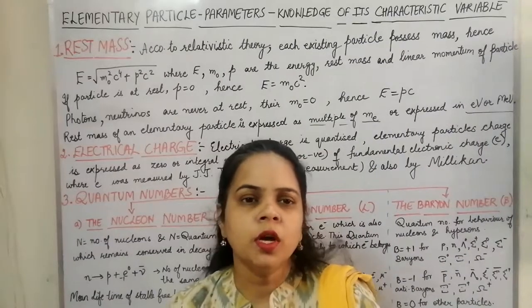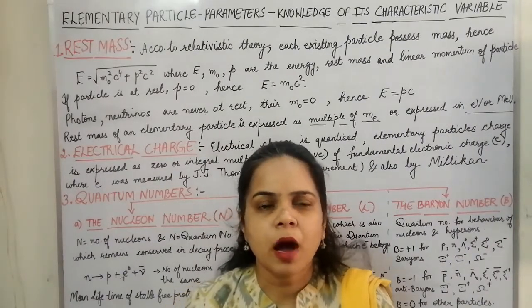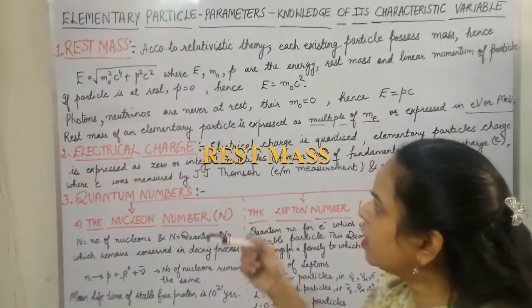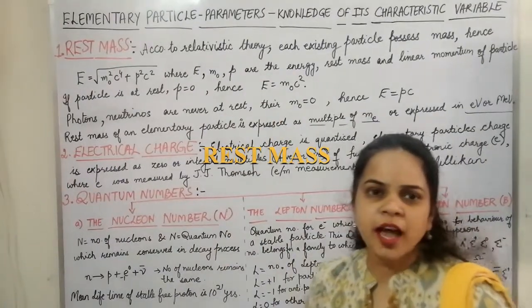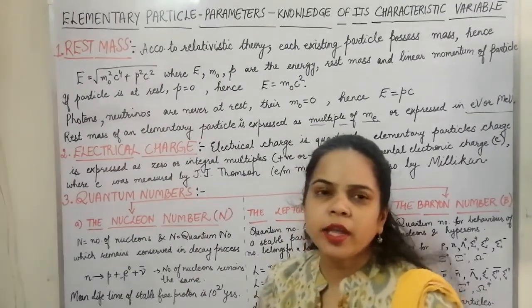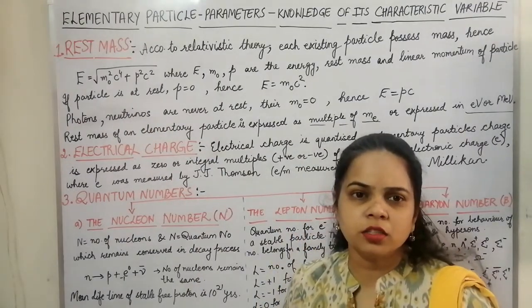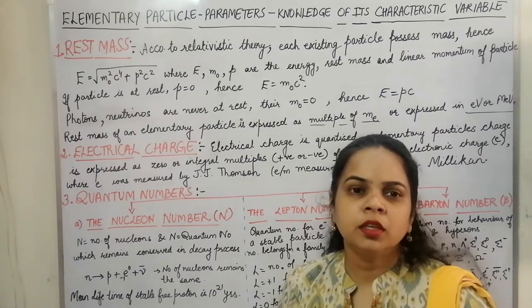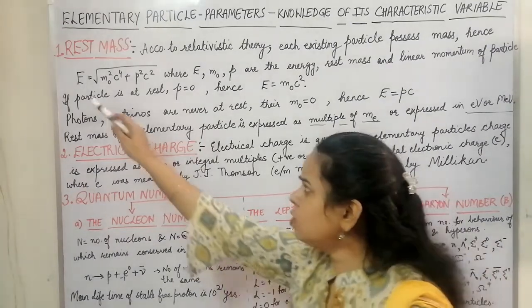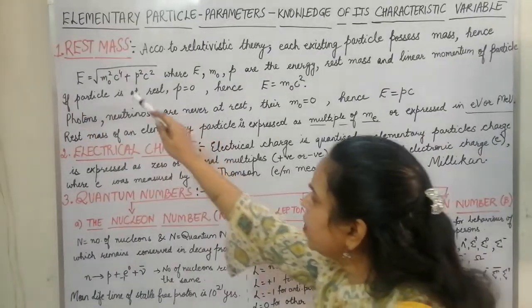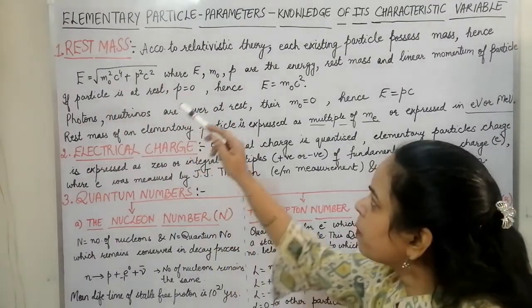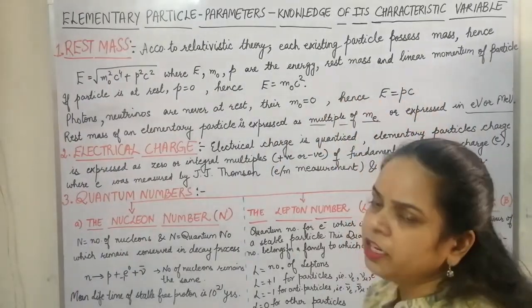The first parameter we are going to discuss for the elementary particle is the rest mass. Each particle is associated with its rest mass. According to the relativistic Einstein relation, E equals the square root of m₀²c⁴ plus p²c², where energy is related to both the rest mass energy and the momentum. Here E, m₀, and p are the energy, rest mass, and linear momentum of the elementary particles.